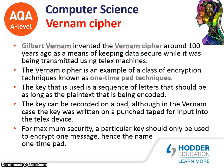We've got the Vernam cipher. Gilbert Vernam invented the Vernam cipher about one hundred years ago. This is also known as the one-time pad — a key that is only used once to encrypt and decrypt a message and then it is discarded. A key that is used is a sequence of letters that should be as long as the plain text that is being encoded. The key can be recorded on a pad, although in the Vernam case the key was written on a punch tape for input into the telex device. For maximum security, a particular key should only be used to encrypt one message, hence the name one-time pad.